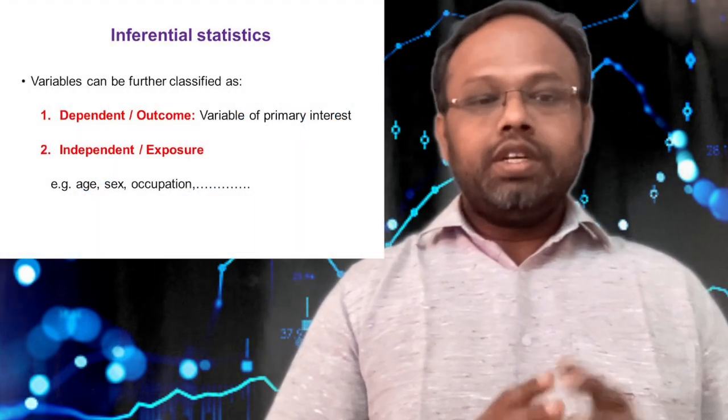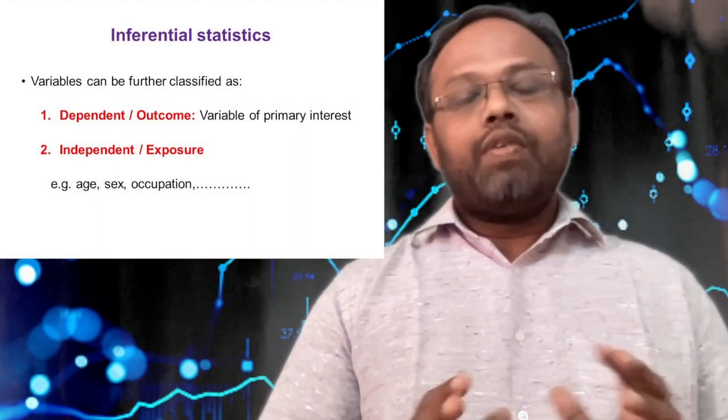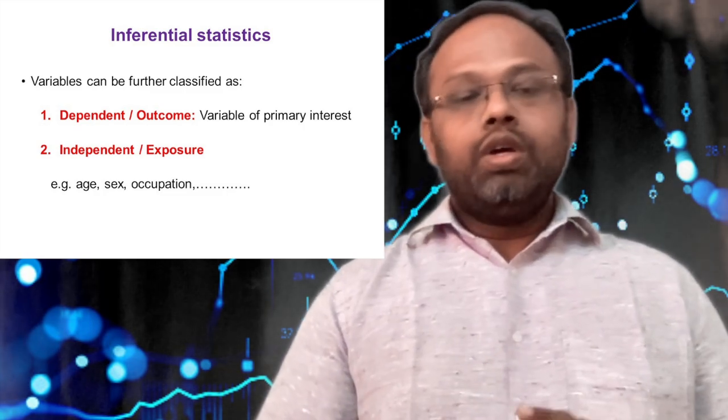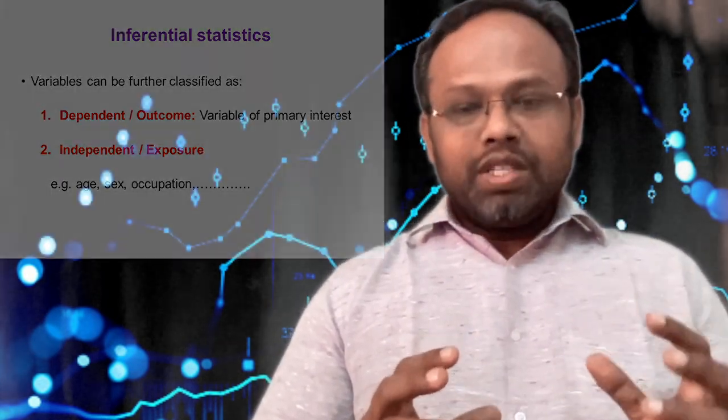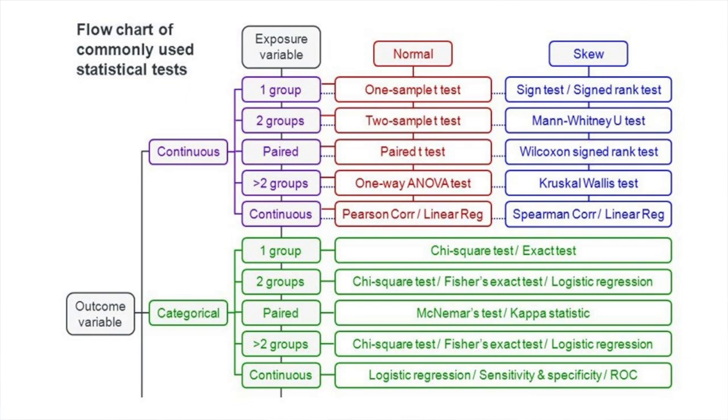So when you are studying association, we have outcome variable and exposure variable, or we can call it dependent variable and independent variable. We always do association between one variable and another variable. If that variable is category versus category, then we use chi-square test or Fisher's exact test based on the needs. If one variable is a category with two outcomes and the other variable is a numerical variable, we have t-test. These are the simple tests which we use in our research analysis, but there are plenty of tests under different circumstances—all have been given in this chart; you can pause and you can see it.